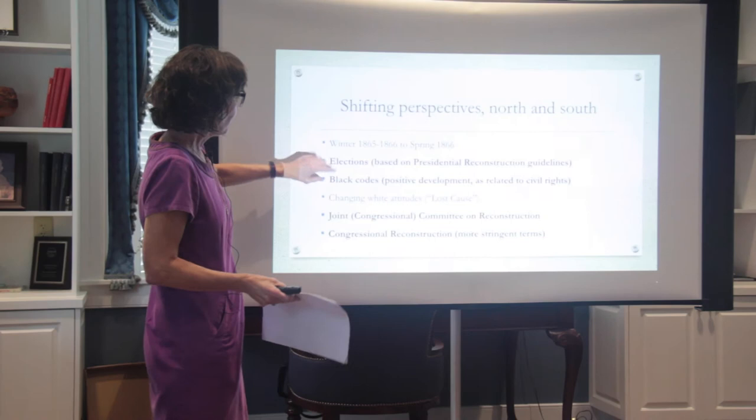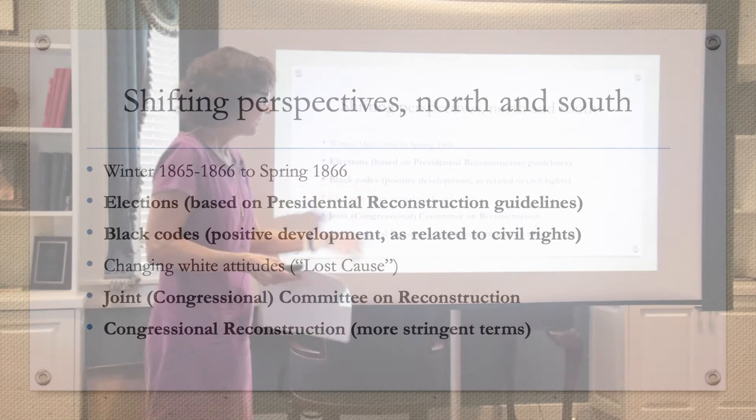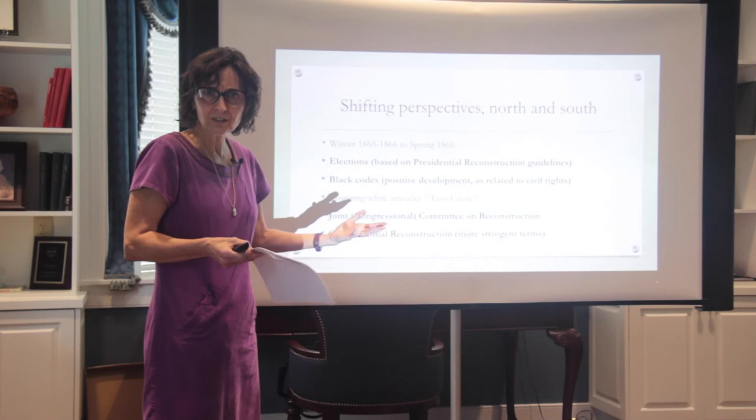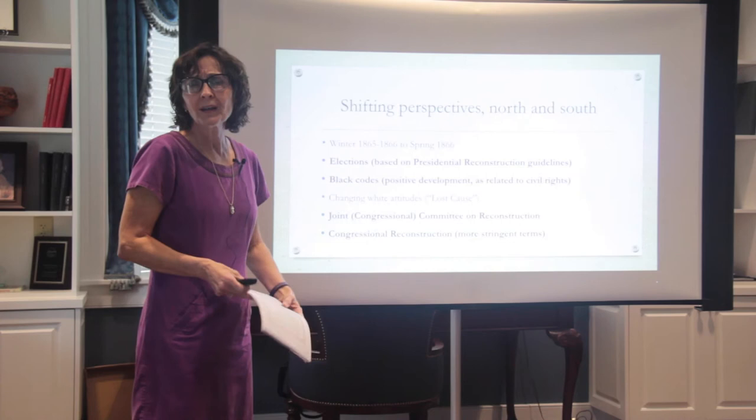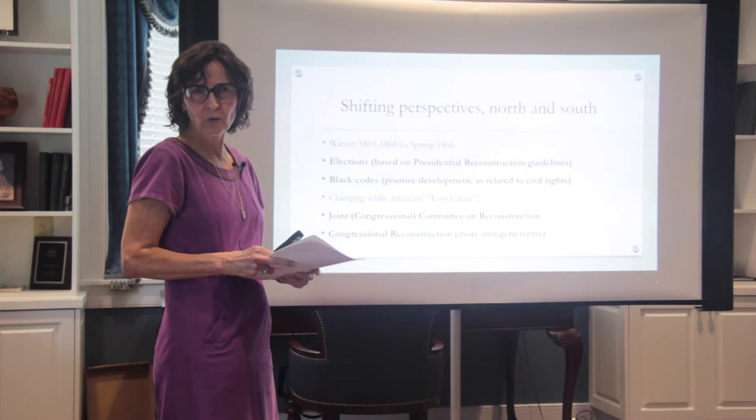Now let's talk about political factors. Southerners held elections after going through presidential reconstruction, and when they elected their senators and representatives to send to Washington, every one of them are Democrats — like we're just going back to the way things were prior to the war. So Congress starts scratching their head saying, wait, we just fought four years, and we're going back to the way things were, with the exception that slavery has ended.